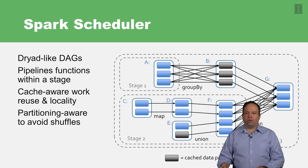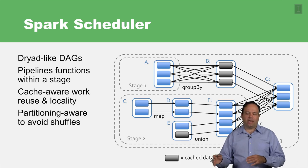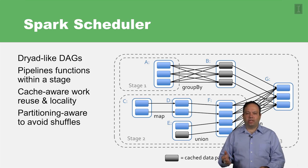The scheduler is also cache aware, because in RDDs you can say RDD.cache. Therefore, the scheduler can utilize that information and say: RDD1 is cached, RDD2 is using RDD1 — so let me try to schedule the computation for RDD2 on the same boxes that are caching RDD1.